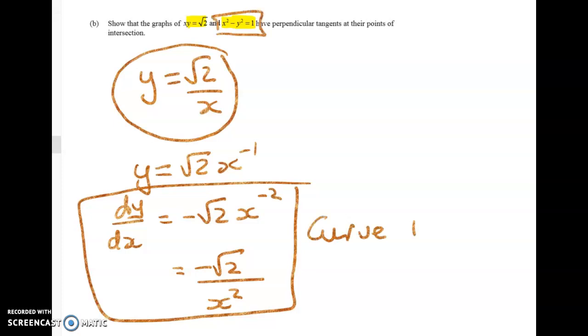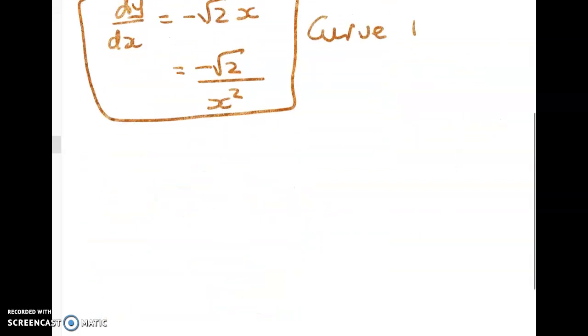Now for the next one, x squared minus y squared equals 1. I'm sure some of you are going to try and rewrite it as y squared equals blah blah blah and then y is equal to plus or minus. And yes you can do that but the chances that you muck up the differentiation are pretty high. If you're sitting scholarship calc you really should be very confident with implicit differentiation so that's how I'm going to do this one.